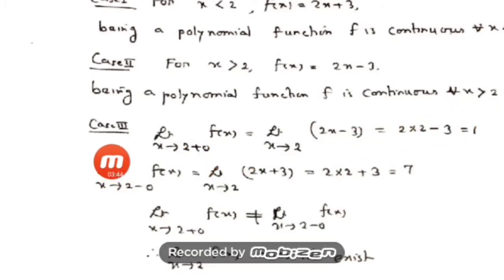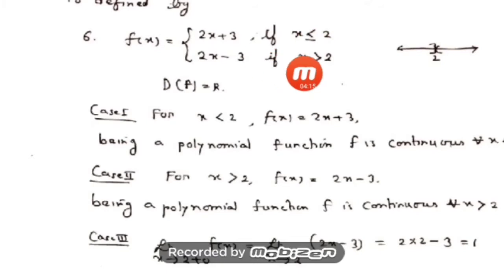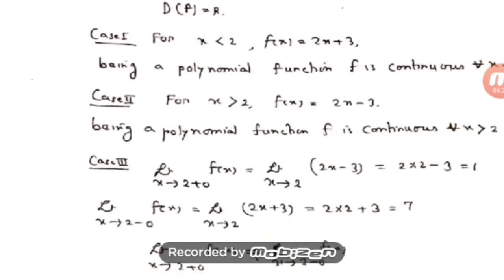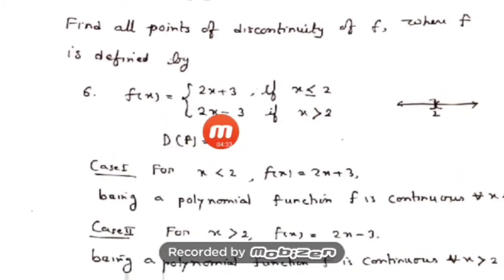The remaining case is at x equal to 2. At an equality point, you must always show the calculation — do not just use the result. Since the function is defined differently for x greater than 2 and x less than 2, you have to separately compute the left-hand limit and the right-hand limit. So I have calculated limit as x tends to 2⁺ of f(x) and limit as x tends to 2⁻ of f(x). For x > 2, f(x) = 2x − 3; for x < 2, f(x) = 2x + 3.